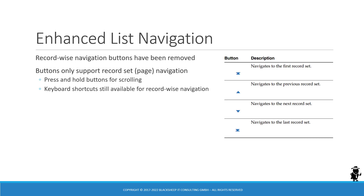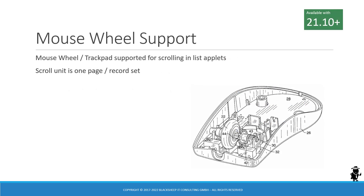Keyboard shortcuts for record-wise navigation still work in Siebel IP17 and higher, so users have that option available. Additionally, a recent update — version 21.10 at the time of recording — introduced support for mouse wheel scrolling. You can place your mouse cursor over the grid section of a list applet and use the mouse wheel to scroll by record set or pages.